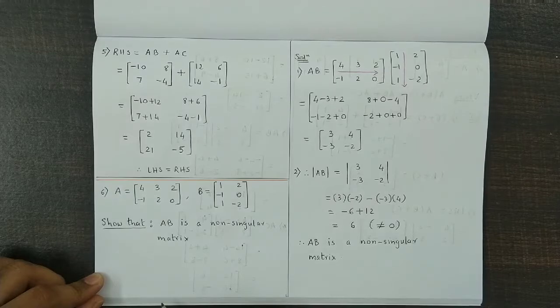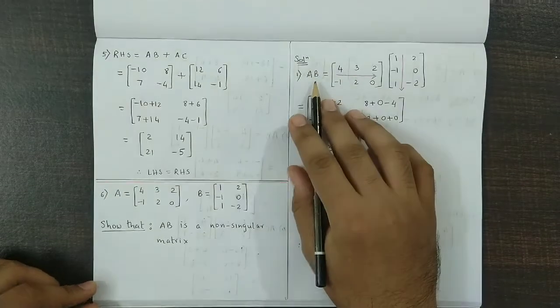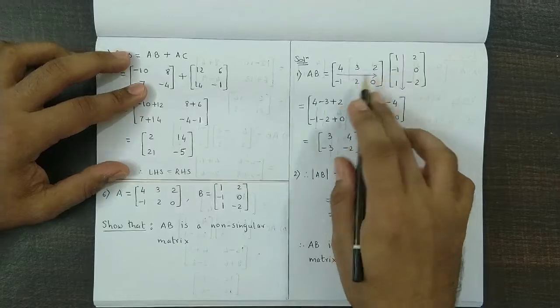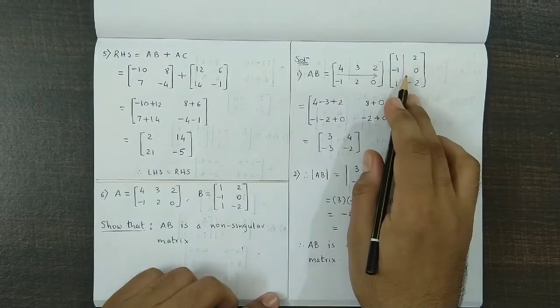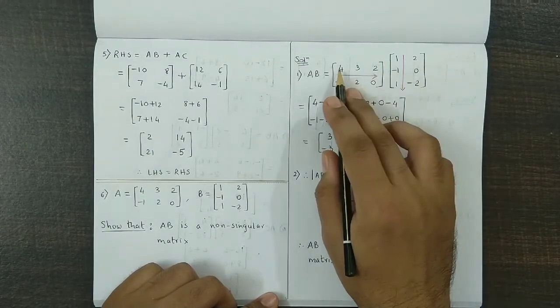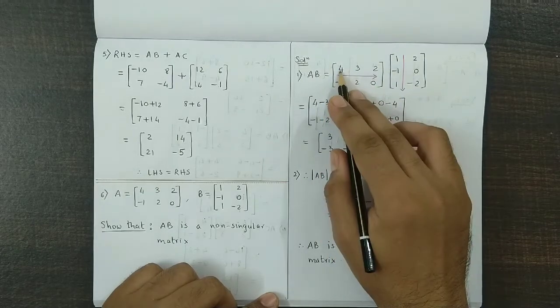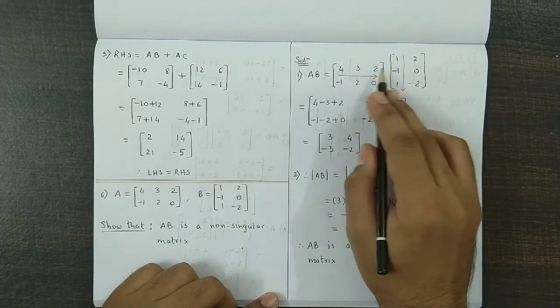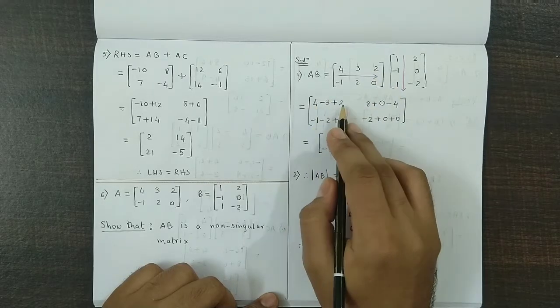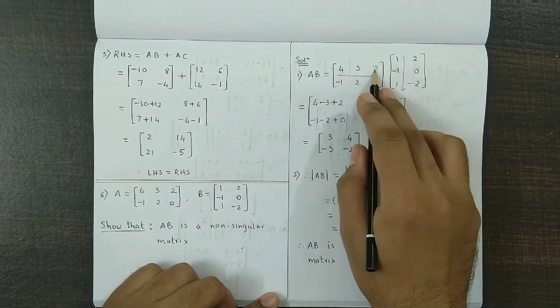So let us obtain the product AB. We write down the two matrices, matrix A and matrix B, and then we multiply the rows and the corresponding columns. First is R1 into C1, so we have 4 times 1 is 4, then minus 3, then plus 2, so 4 minus 3 plus 2.